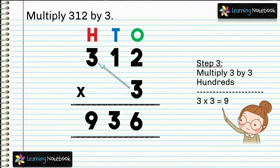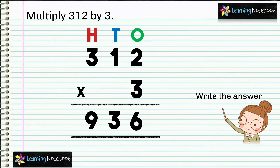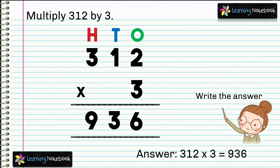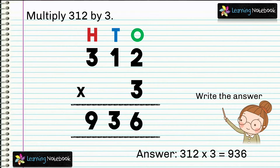So we get the product as 936. 312 into 3 equals to 936. Students, this is also an example of multiplication without regrouping. In our next example, we will see how to do multiplication with regrouping.